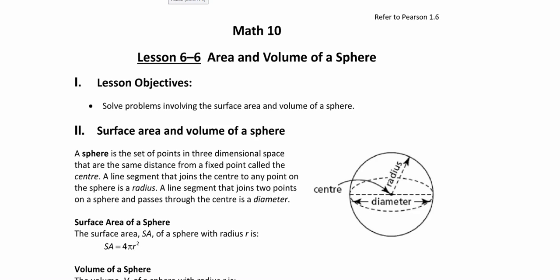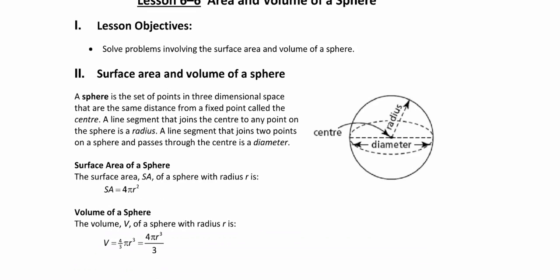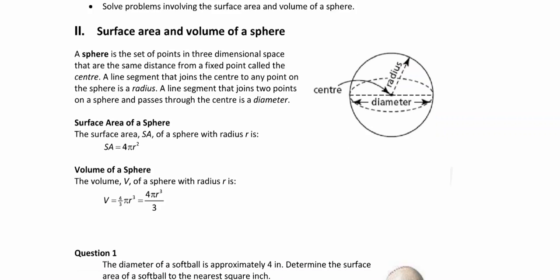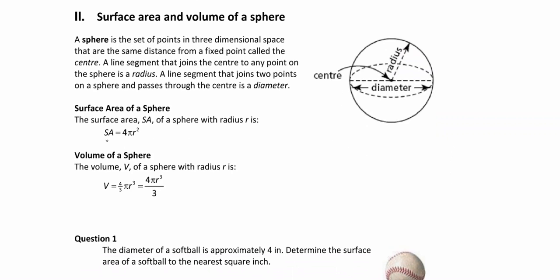Lesson 6.6 is on area and volume of a sphere. A sphere is essentially a ball. Technically, a sphere is defined by a center point with a radius drawn outward that is the same distance everywhere around it — the same radius in every direction. This is in three dimensions, making it the three-dimensional version of a circle.